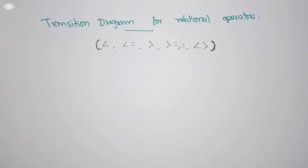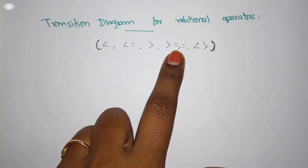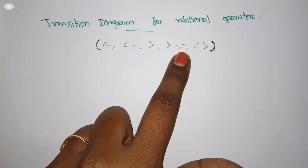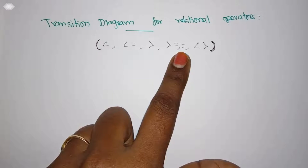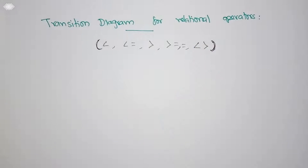This video we are going to see how to draw a transition diagram for relational operators. This is one specific program — whatever we take, it varies from each and every programming language. These are some relational operators: less than, less than or equal to, greater than, greater than or equal to. Some programming languages use a single equal-to symbol for the equal-to condition, and this symbol denotes a not-equal-to case. This is one specific criteria I have taken; it varies from programming language to programming language.